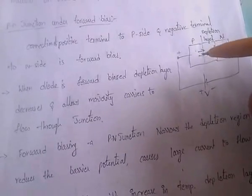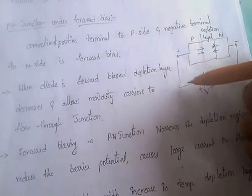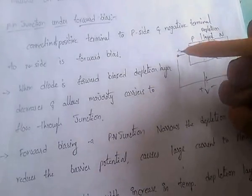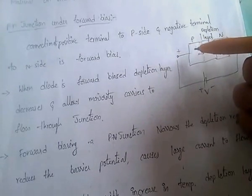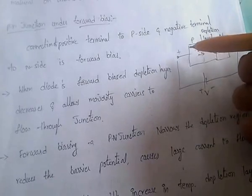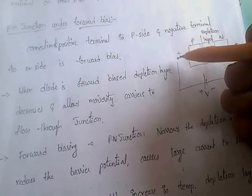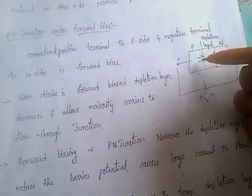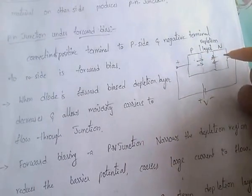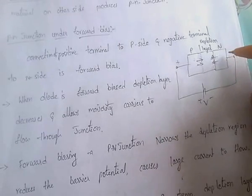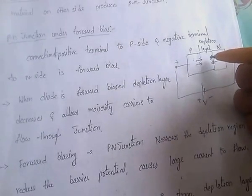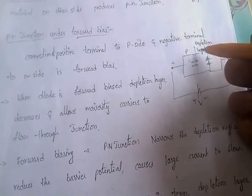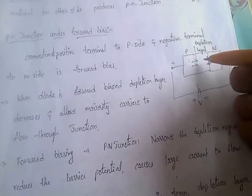Whenever we connect the diode in forward bias, the positive terminal is connected to P-type and the negative terminal is connected to N-type. The positive terminal and P-type are both positive, so they repel each other, and the carrier moves toward the junction. The width of the depletion region decreases.